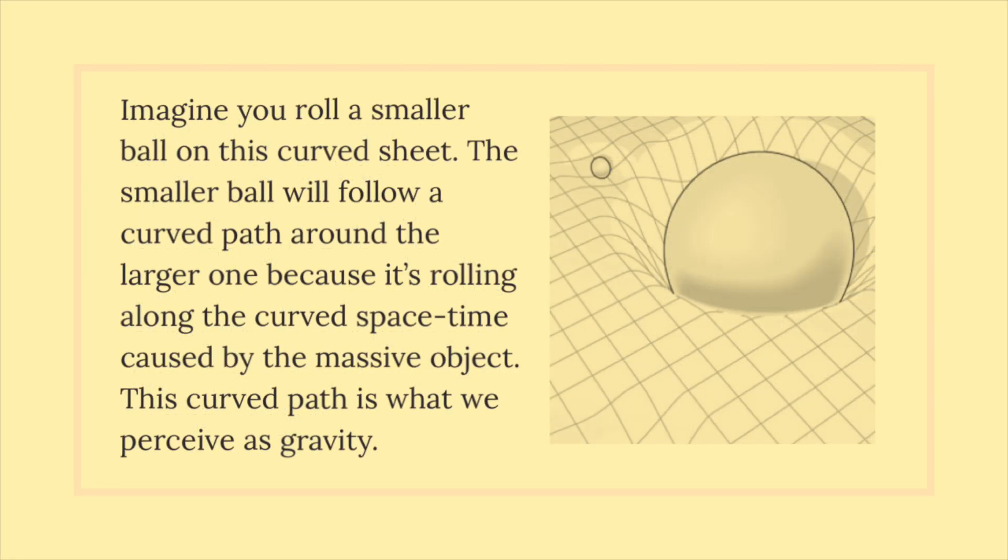Imagine you roll a smaller ball on this curved sheet. The smaller ball will follow a curved path around the larger one because it's rolling along the curved spacetime caused by the massive object. This curved path is what we perceive as gravity.